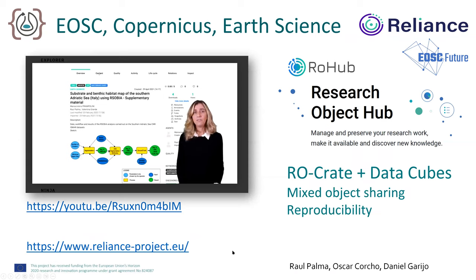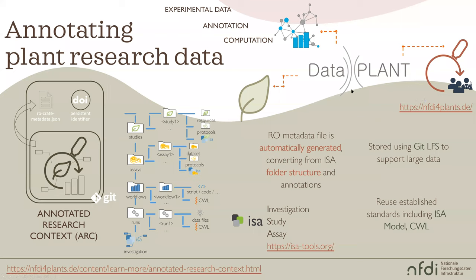The Reliance project does earth science — climate models, biodiversity — and they have something called the Research Object Hub where you can manage and create research objects, similar to Describo, but also connecting in workflows and executing things over the research object. From plant sciences, researchers follow a particular structure using the ISA model — Investigation, Study, Assay — with CSV files. Then they can run a tool and create an RO-Crate as a composition of all of those individual components.